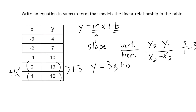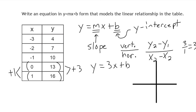Now the next thing is figuring out what b equals. B in our formula is the y-intercept — where our line crosses the y-axis. Any point located directly on the y-axis will always have an x-value of 0. So whether a point is high or low on the y-axis, if we go down to the x-axis, the x-value is going to be 0.